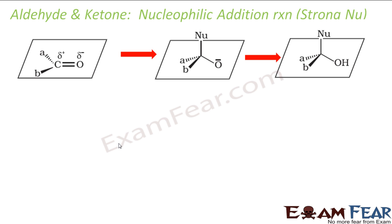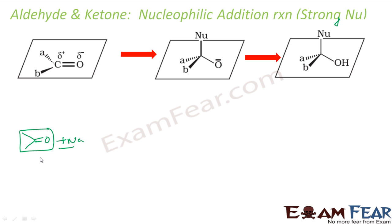Now we'll talk about the nucleophilic addition reaction. We'll talk about the mechanism. So if I have a carbonyl, there are two options. The nucleophile is going to attack this carbonyl part - it is either strong or weak. Let's take one scenario where the nucleophile is strong with a negative charge.